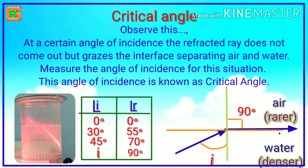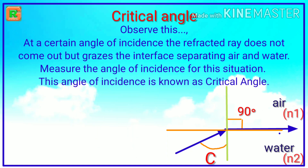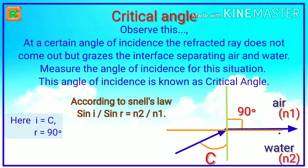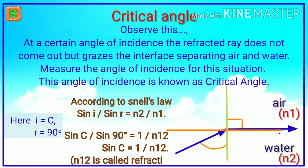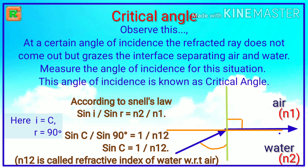This critical angle is denoted by c. Let us take the refractive indices of air and water as n1 and n2 respectively. According to Snell's law, sin i / sin r = n2 / n1. Here, i = c and r = 90 degrees. So sin c / sin 90 = 1 / n12. That is, sin c = 1 / n12, where n12 is called the refractive index of water with respect to air.